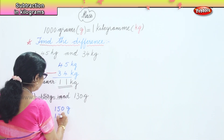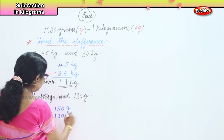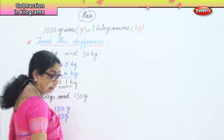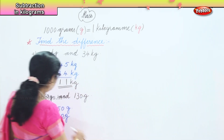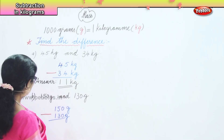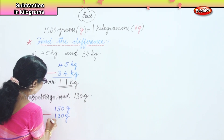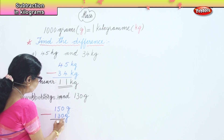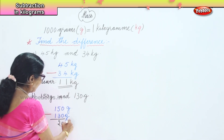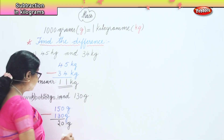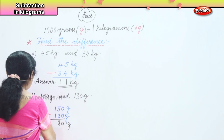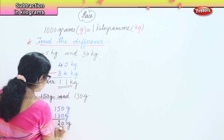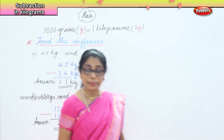We are finding the difference between these two, so let's put the minus sign correctly. 0 minus 0 is 0. In the first place we have 0. 5 take away 3 is 2. 1 take away 1 is 0. So 150 grams take away 130 grams — the answer is 20 grams.